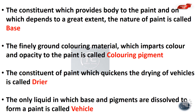The liquid medium in which the base and pigments are dissolved to form a paint is called the vehicle. It is important to note that the base and pigments are dissolved in this liquid medium to form a paint.